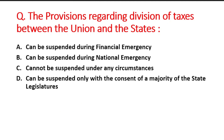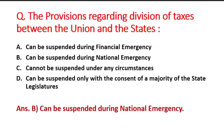Question: There is a provision regarding division of taxes between the Union and the states. Under which situation can this be suspended? Option A is during financial emergency, B is during national emergency, C is cannot be suspended under any circumstances, D is can be suspended only with the consent of the majority of state legislatures. The right answer is option B — it can be suspended during the national emergency.